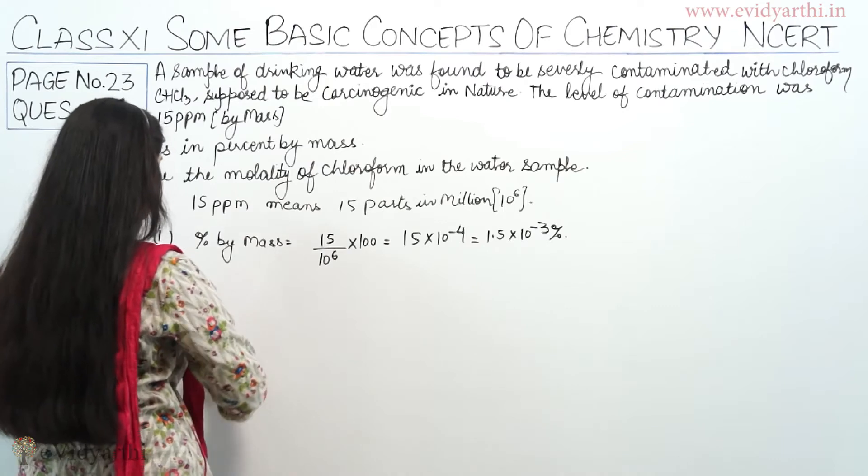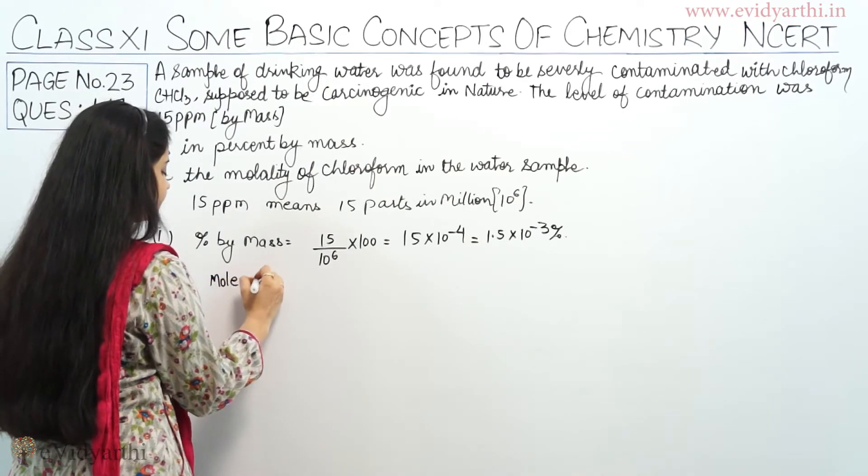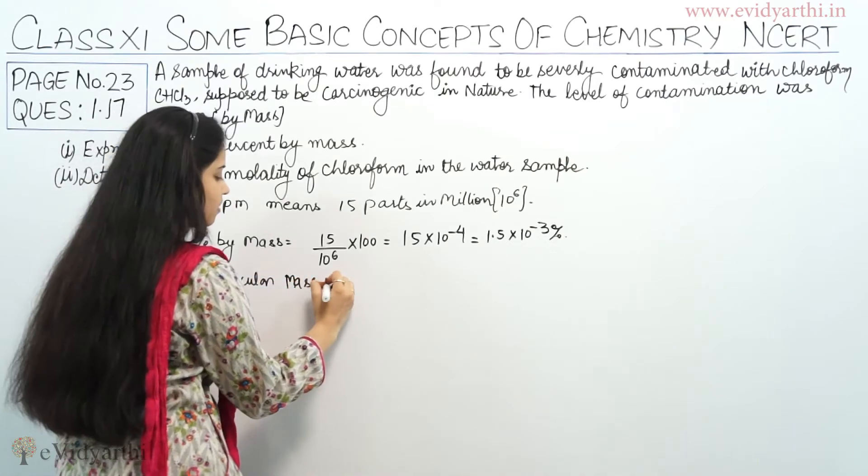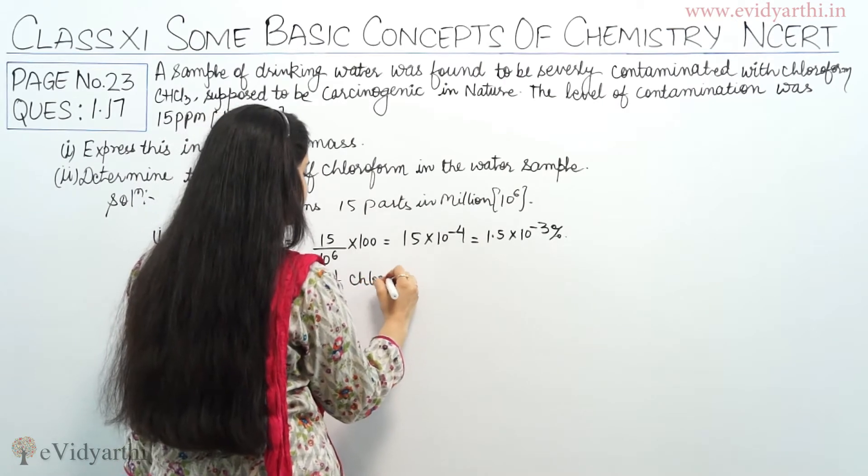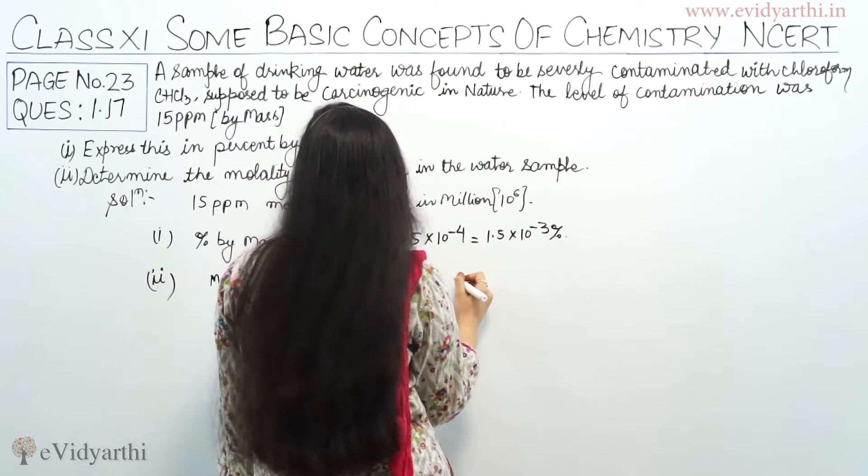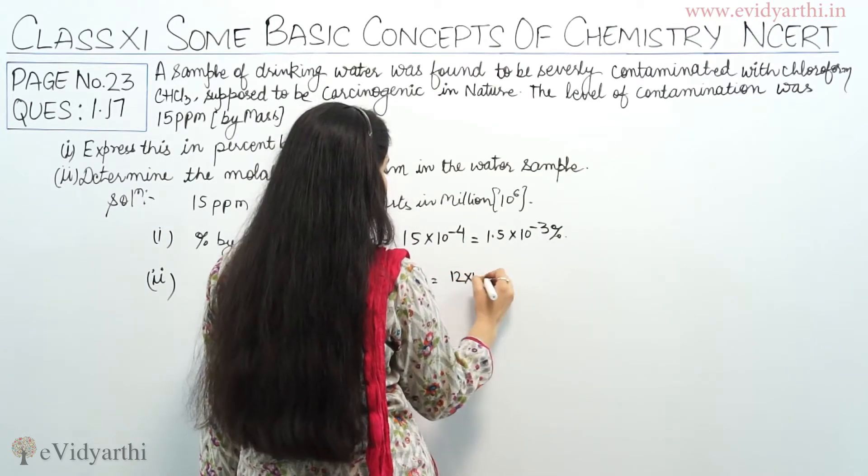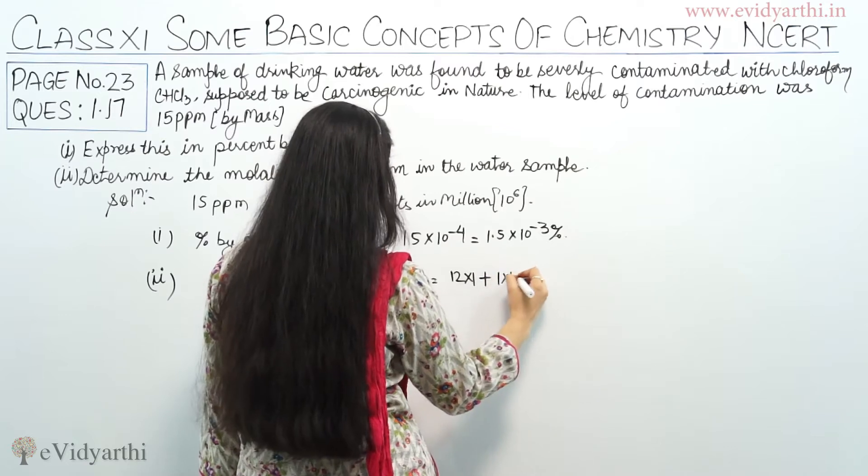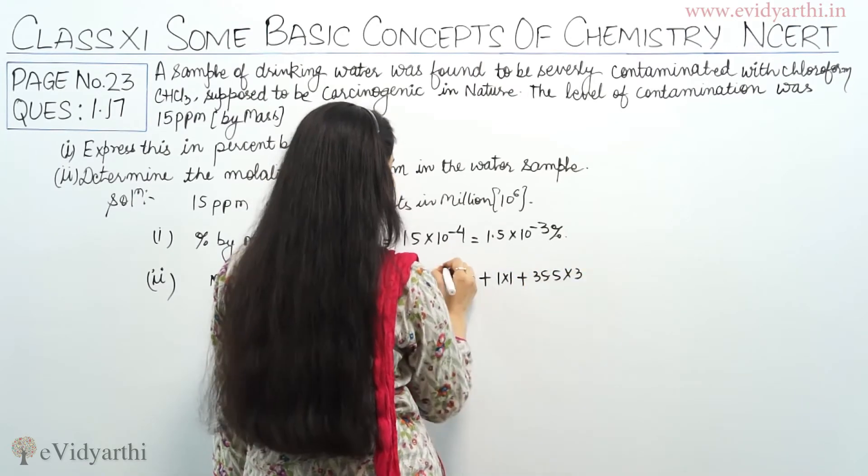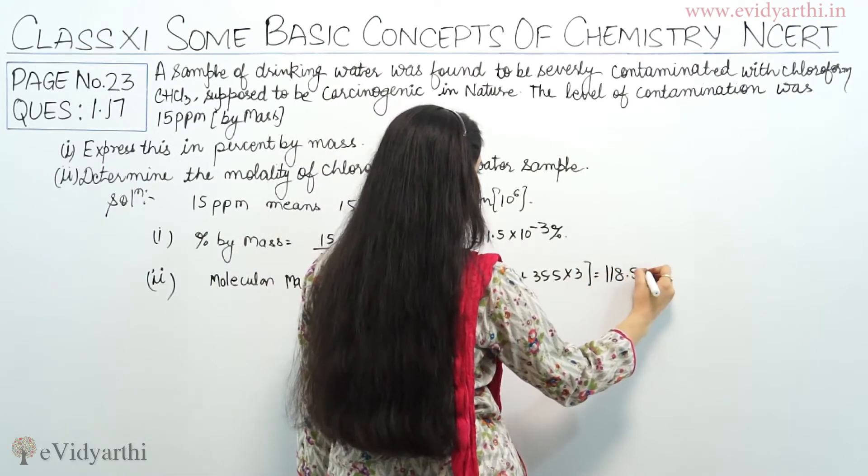First of all we need to determine the molecular mass of chloroform. So molecular mass of chloroform CHCl3 is 12 into 1 plus 1 into 1 plus 35.5 into 3, which equals 118.5 gram per mole.